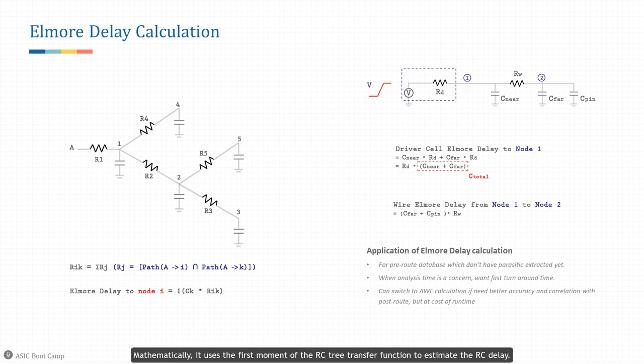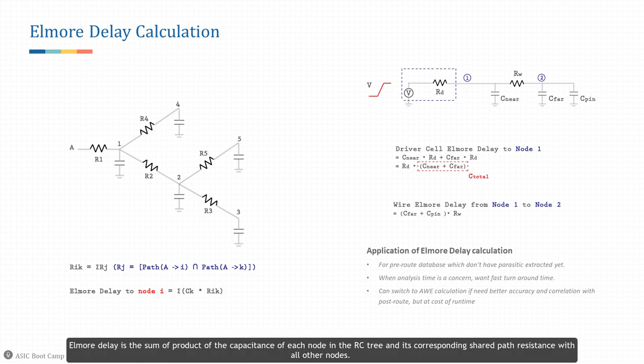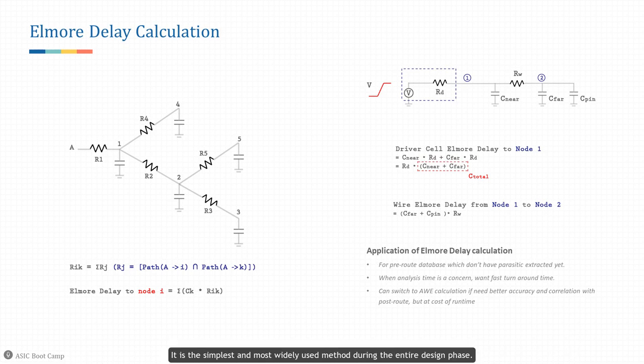The Elmore delay model defines a shared path resistance between any two nodes in an RC tree, which is the sum of resistance on the common path from the source to both nodes. Elmore delay is the sum of products of the capacitance of each node in the RC tree and its corresponding shared path resistance with all other nodes. It is the simplest and most widely used method during the entire design phase.